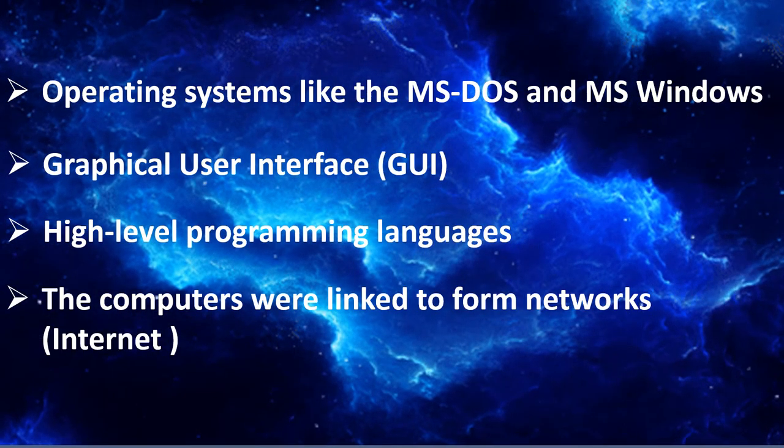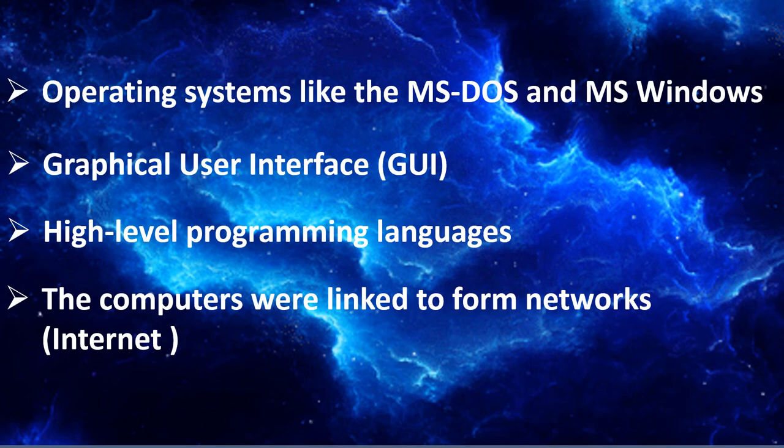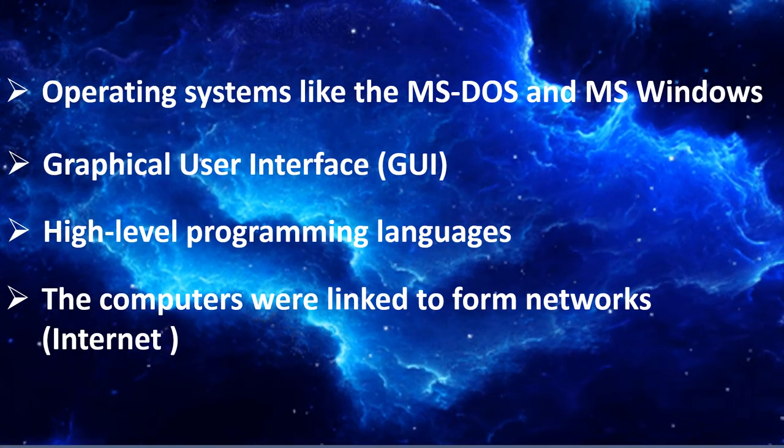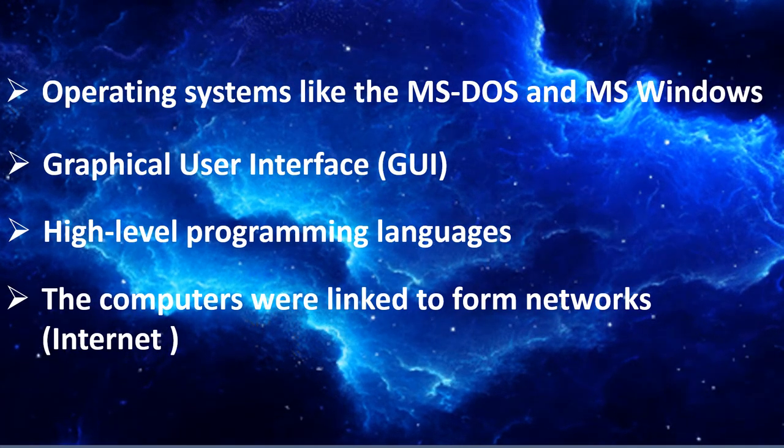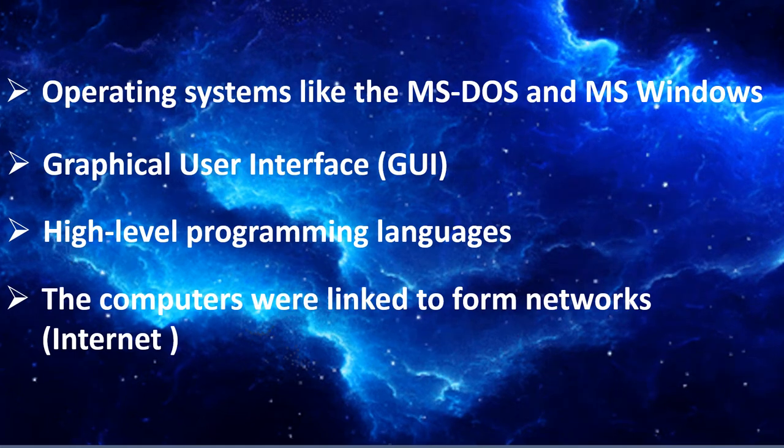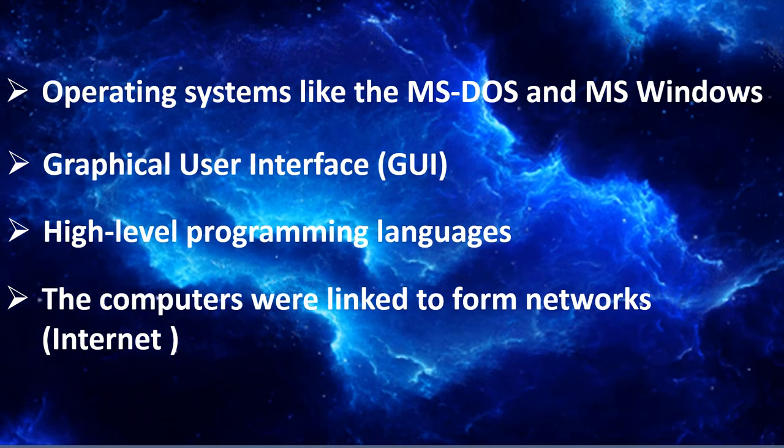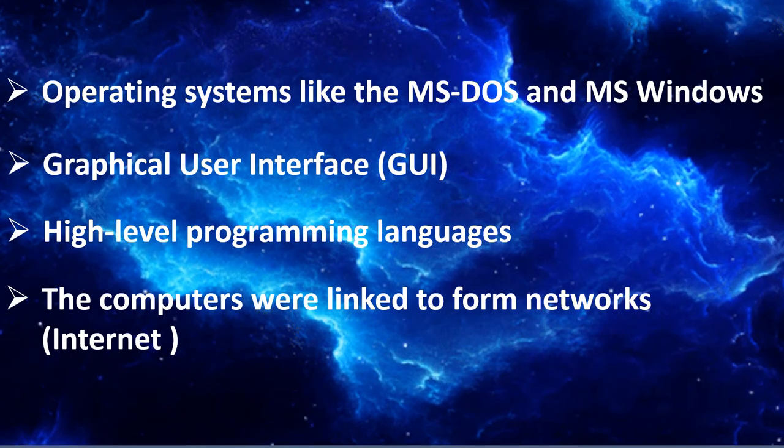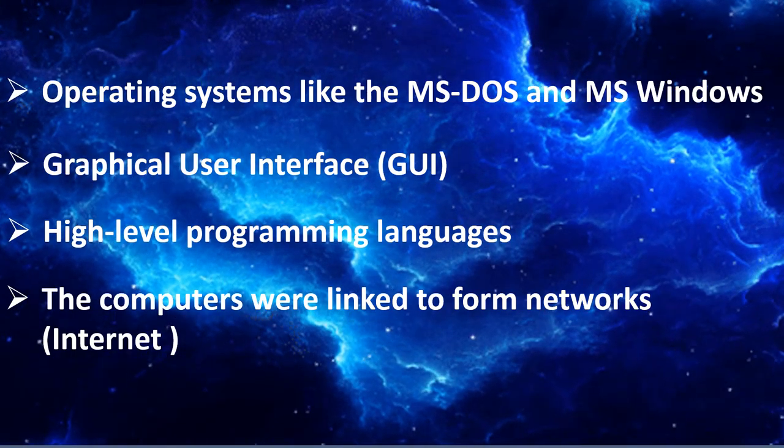Operating systems like MS-DOS and MS-Windows were developed during this time. This generation of computers supported graphical user interface. High-level programming languages are used for the writing of programs. The computers were linked to form networks that led to the emergence of the internet.